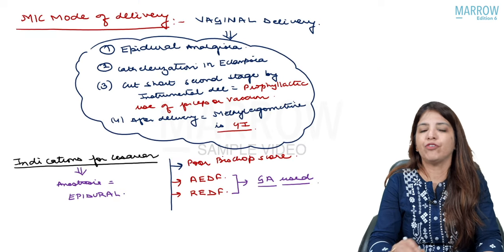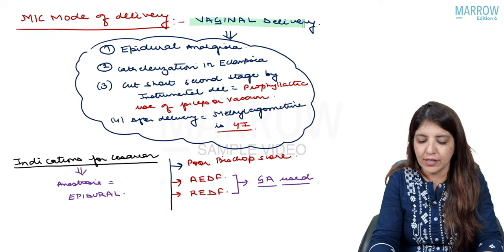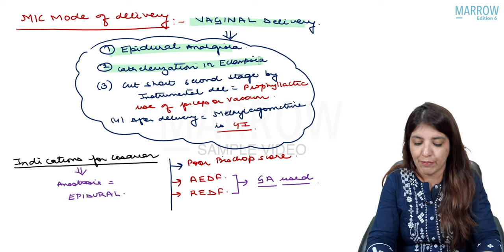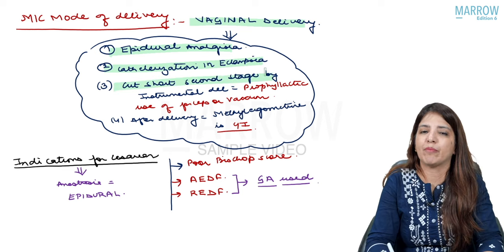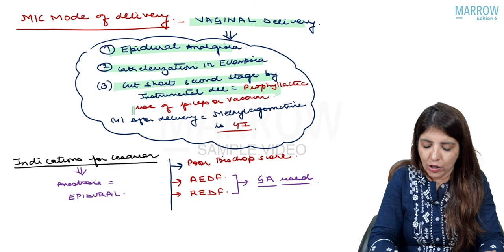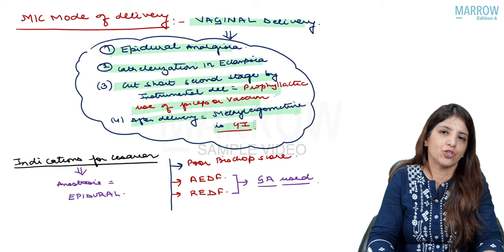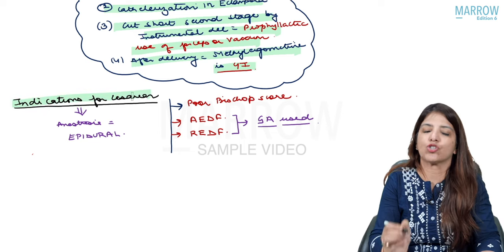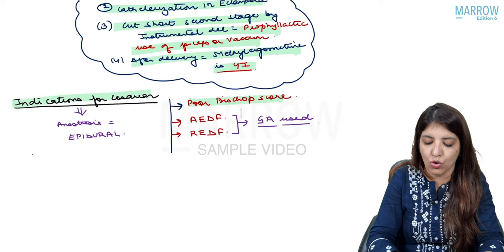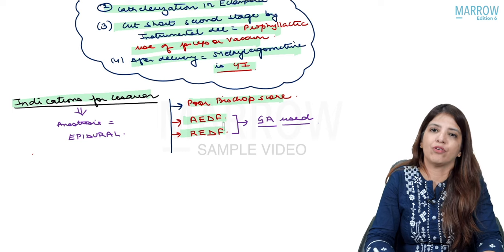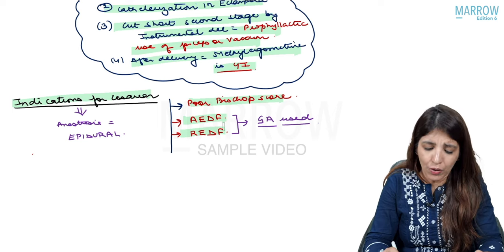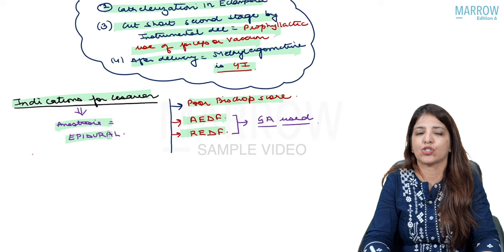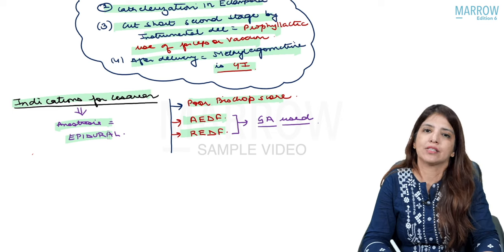The most common mode of delivery in PIH is vaginal delivery. During vaginal delivery, epidural analgesia is given. Catheterization is done in eclampsia patients. Cut short the second stage of labour by prophylactic forceps or vacuum. After delivery, methylergonovine is contraindicated because it increases BP. Indications for cesarean section in preeclampsia are poor Bishop score, absent end diastolic flow, and reversed end diastolic flow. For absent and reversed end diastolic flow, general anesthesia may be used.